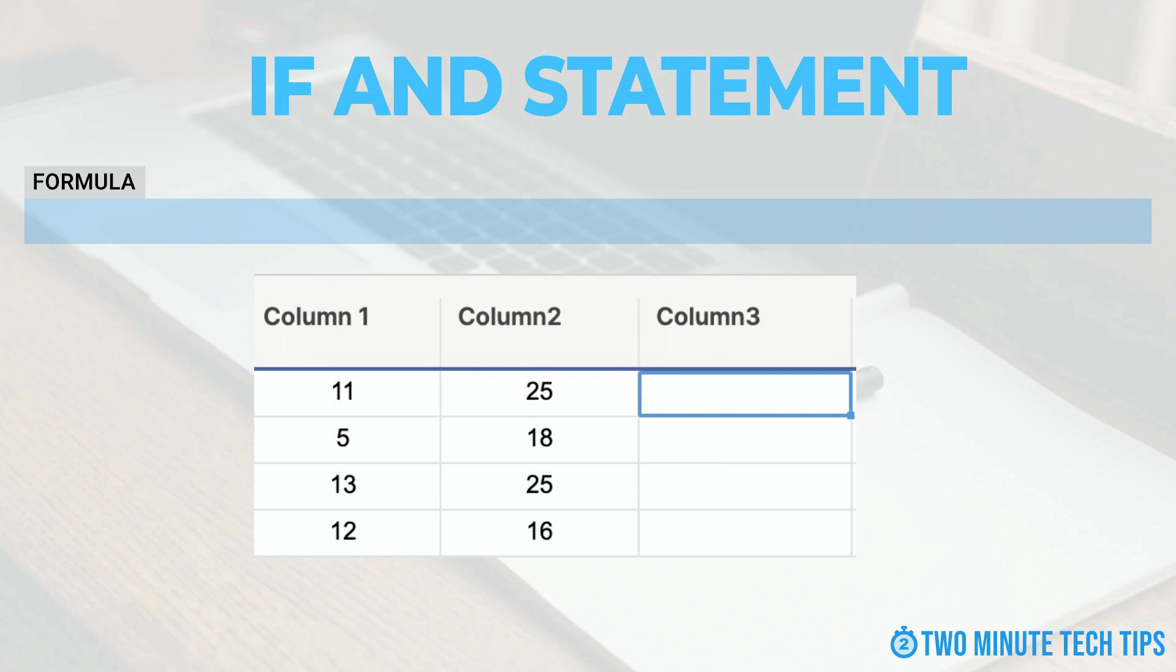Step 2: Begin your formula by typing equals to indicate that you're entering a formula in the cell. Step 3: Type IF in uppercase letters, followed by an open parenthesis, and then type AND followed by an open parenthesis to start the formula.